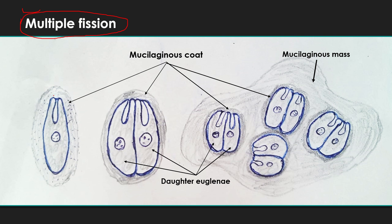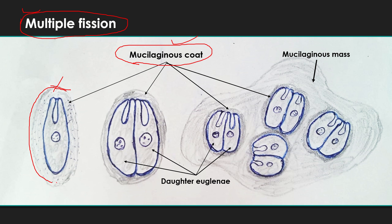The flagellum is thrown out, and Euglena becomes somewhat rounded and embedded in an extensive thick mucilaginous coat. This Euglena is embedded in a covering envelope called the mucilaginous coat, also known as a cyst. This cyst is secreted by the muciliferous bodies.